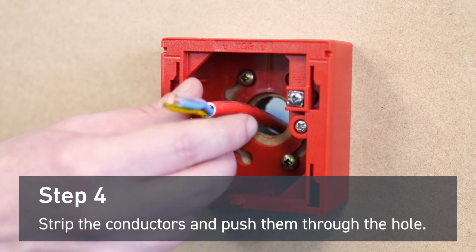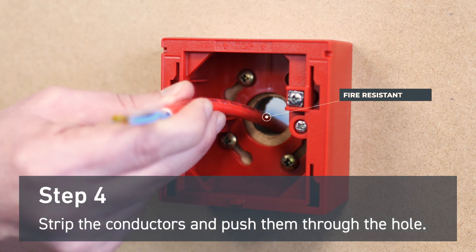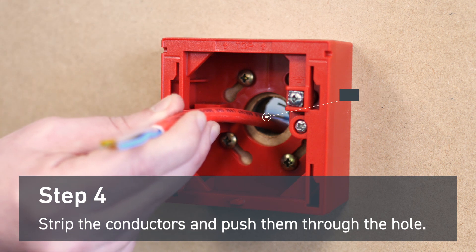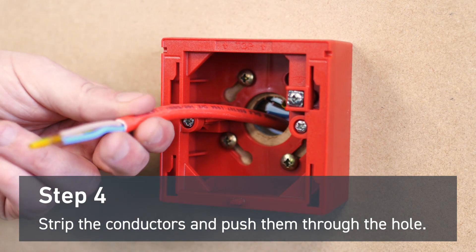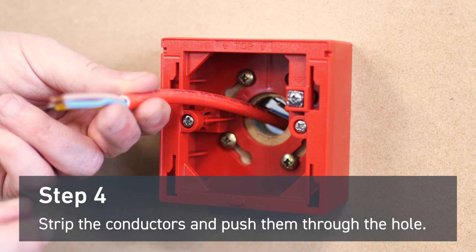Strip the conductors to the correct length and push them through the hole. You may need to apply sleeving to the screen conductor. For this demonstration we've used green and yellow sleeving.